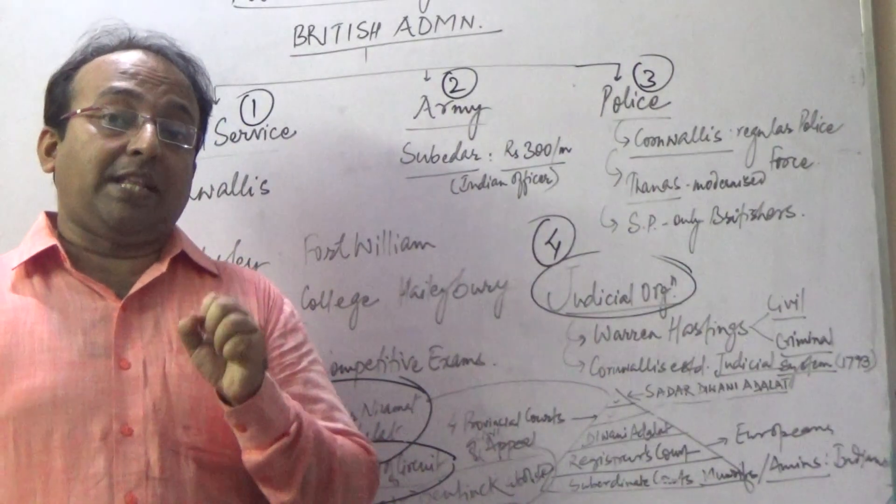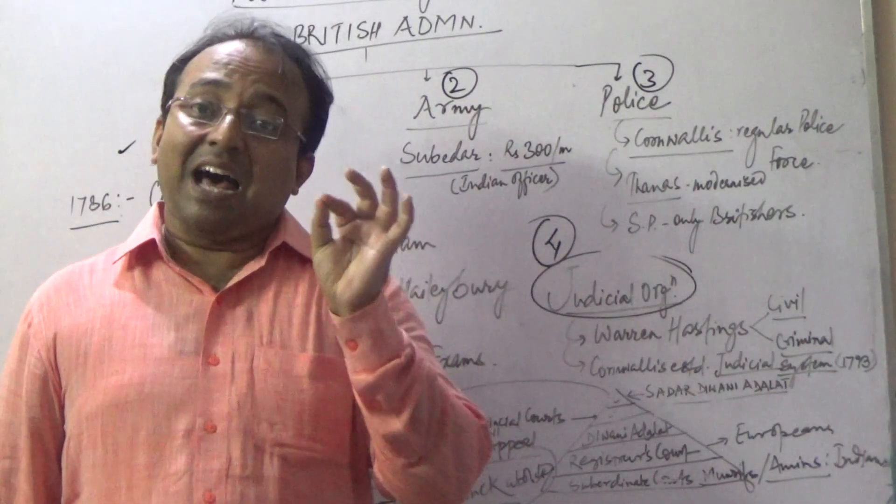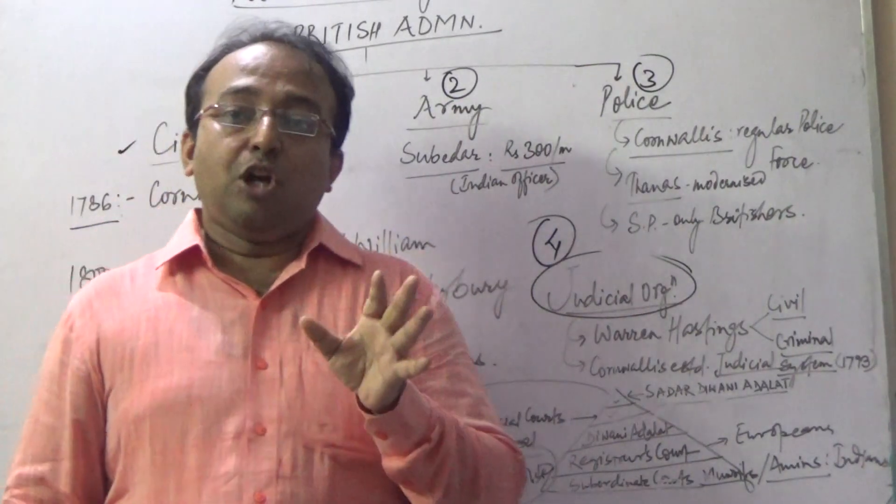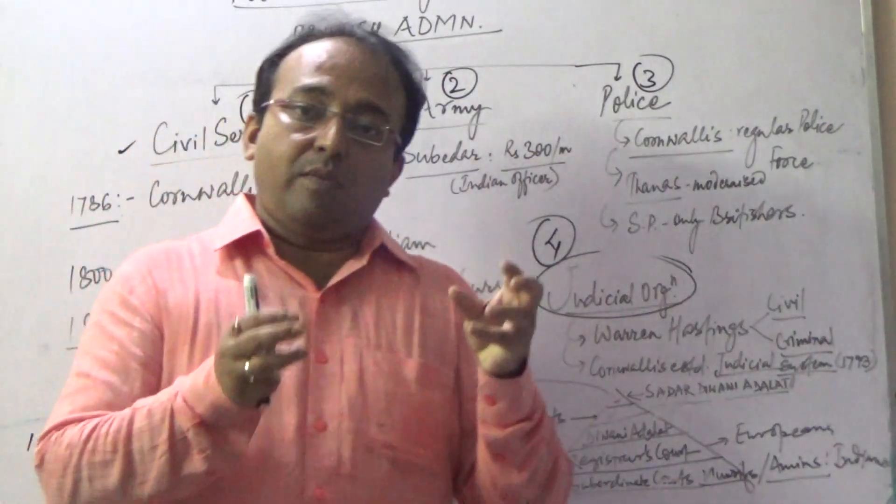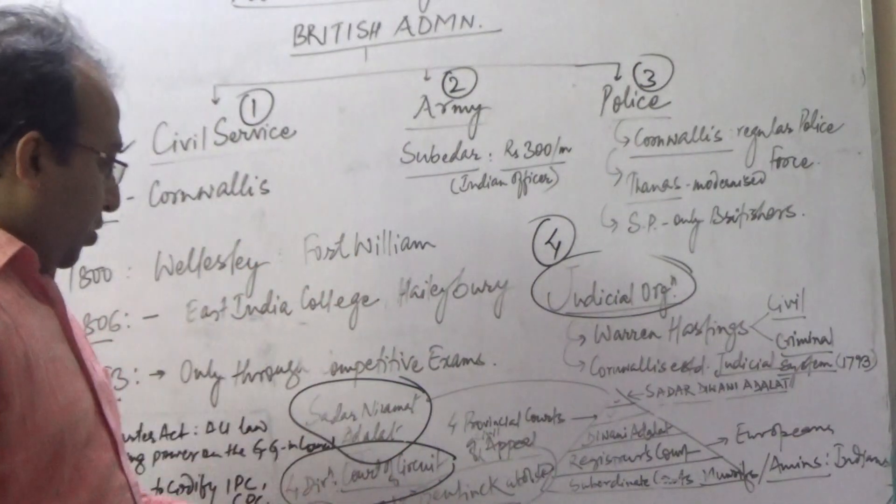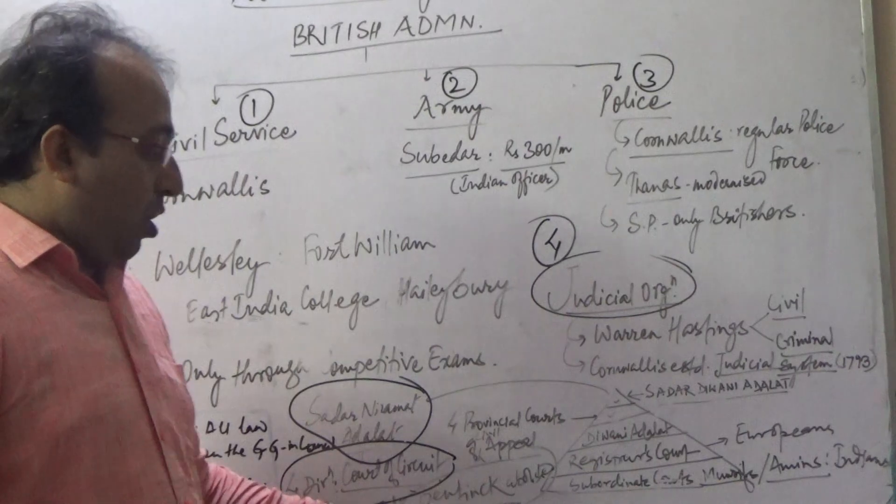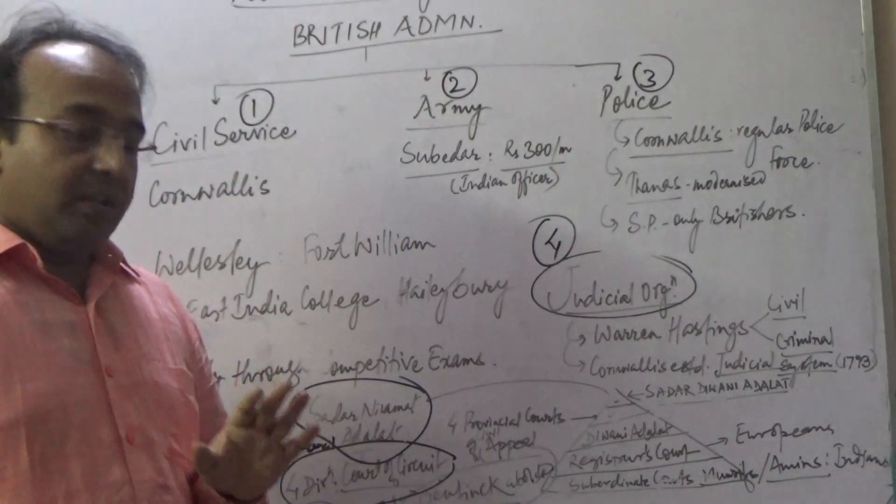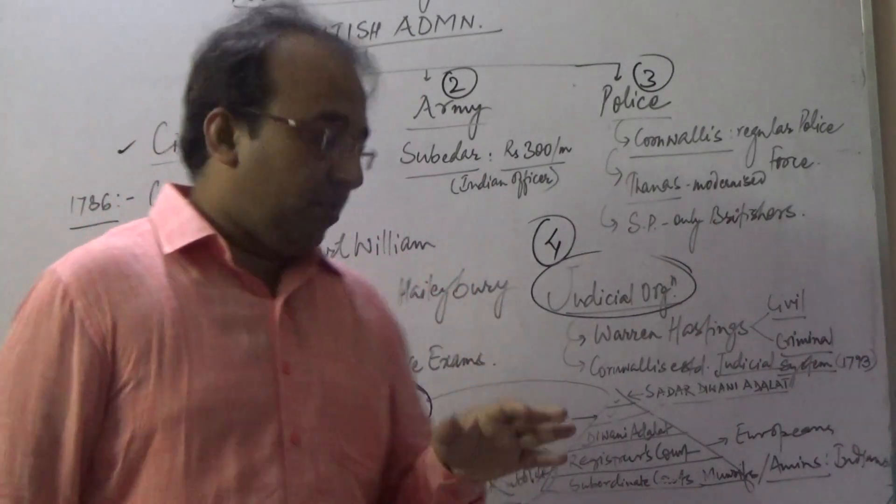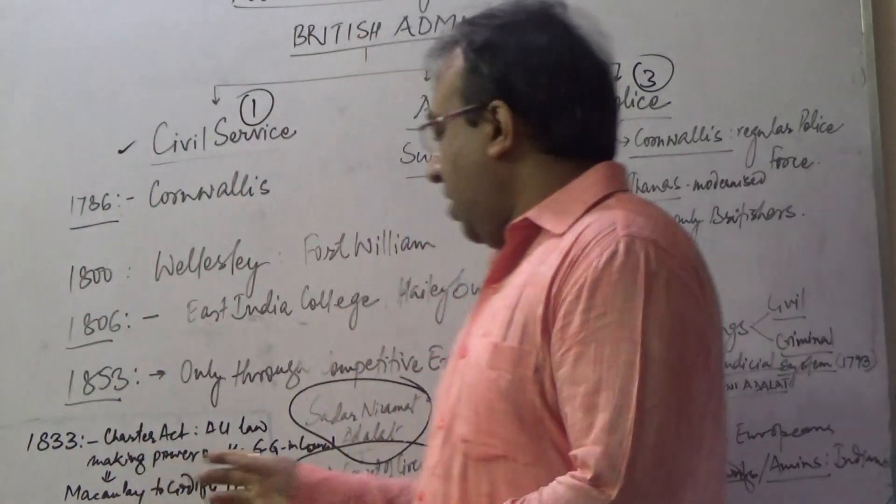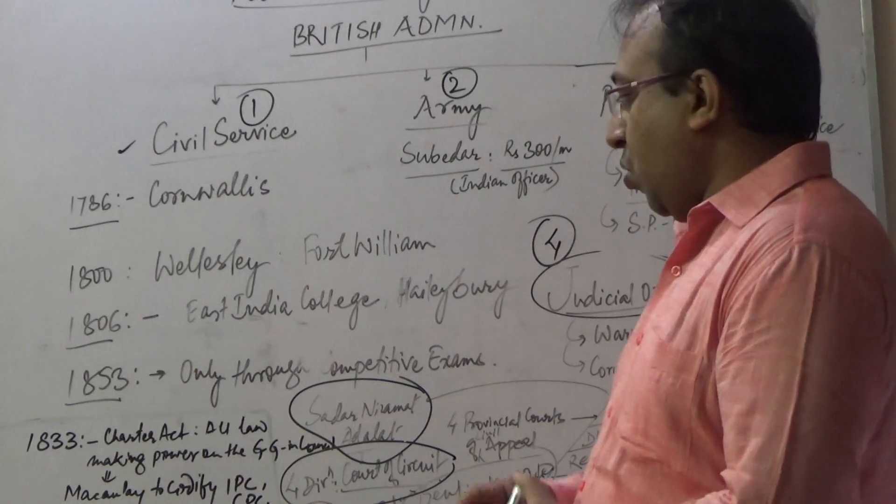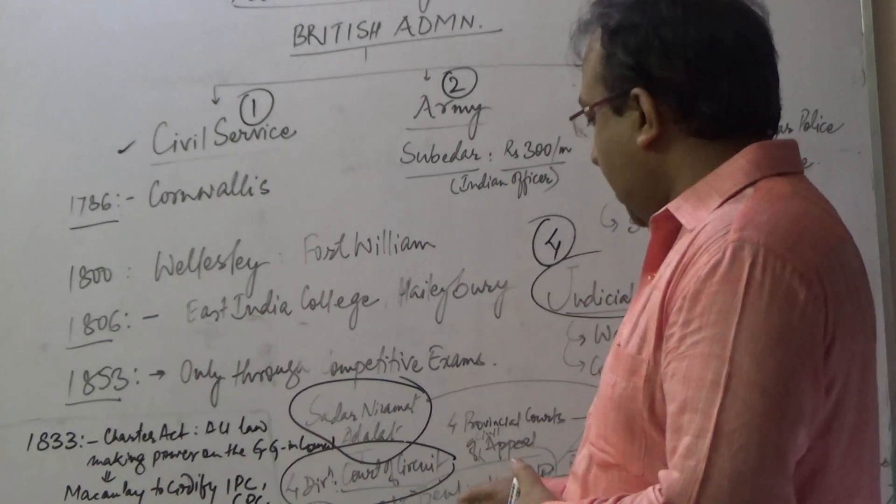These courts at that point of time followed Islamic law in a little bit less harsh manner. Islamic law was implemented in Court of Circuit and the provincial appeal courts. Lord Benton was a person who brought such a reform in the system by abolishing the Court of Circuit and four provincial courts of civil appeal.